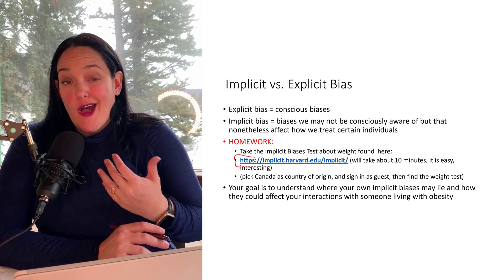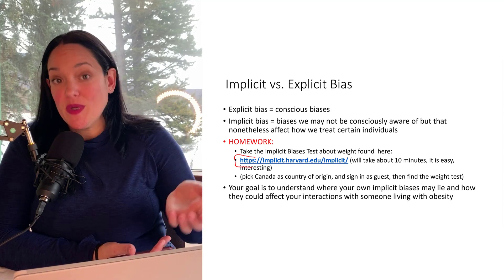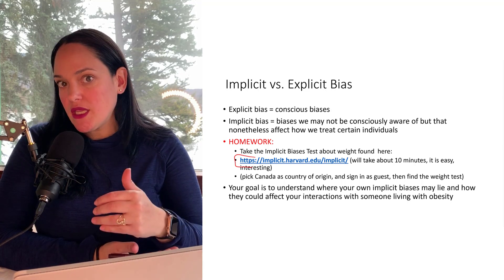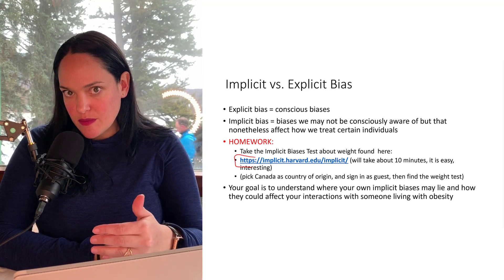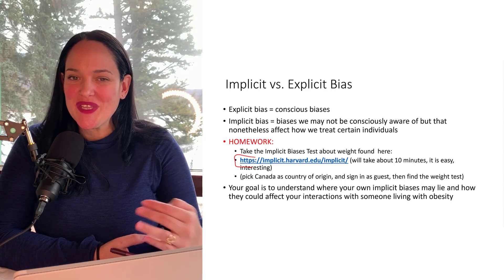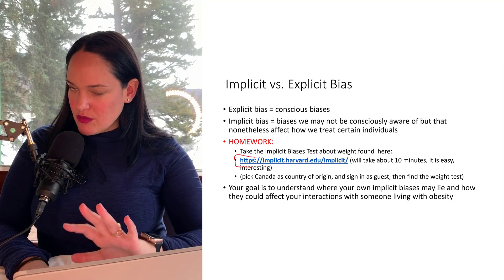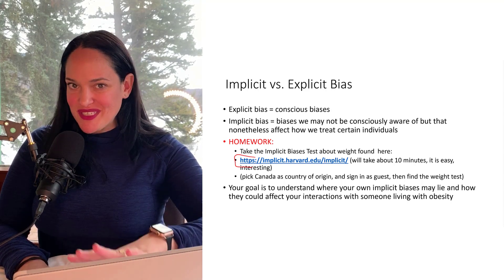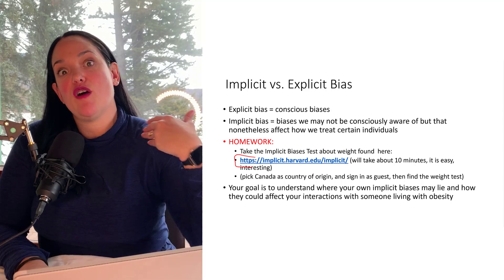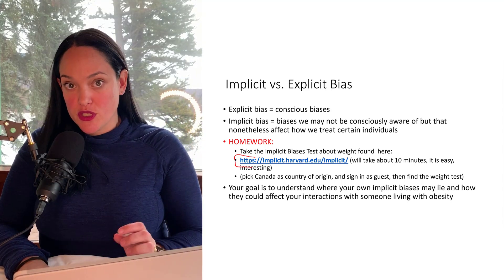I'll be honest — you probably do have implicit biases. And if you do, I do too. I teach a course on obesity and I have implicit biases. It's important to realize you have these implicit biases, because the only way to make a change is to recognize them. Without judgment, knowing whether you have implicit or explicit biases frames how you look at individuals with obesity and how you approach this course.